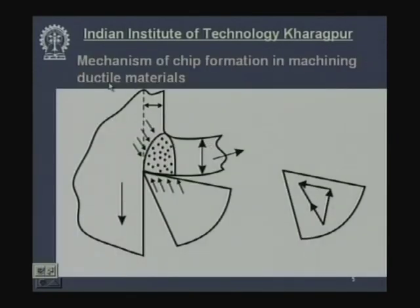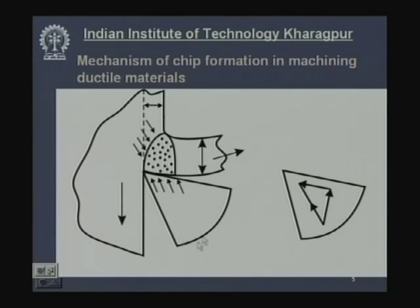Now let us look at the mechanism of chip formation in machining ductile materials, because the mechanisms for ductile and brittle materials are widely different. Most engineering materials that are machined are ductile, and even semi-brittle materials tend to behave ductile under cutting conditions. So most attention will be given to chip formation in ductile materials.